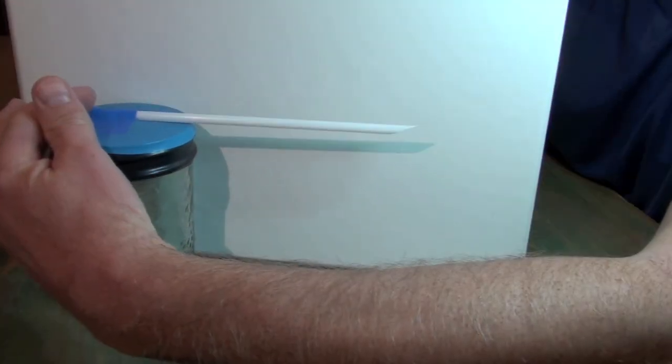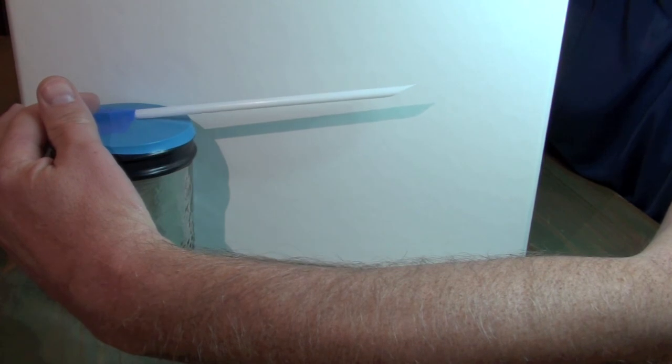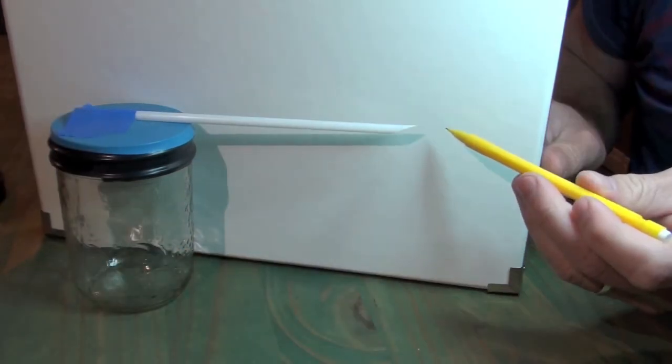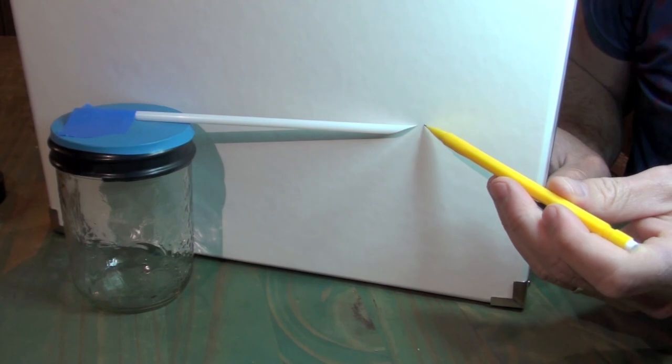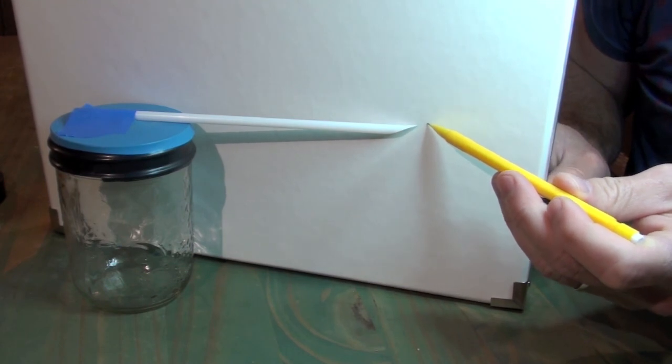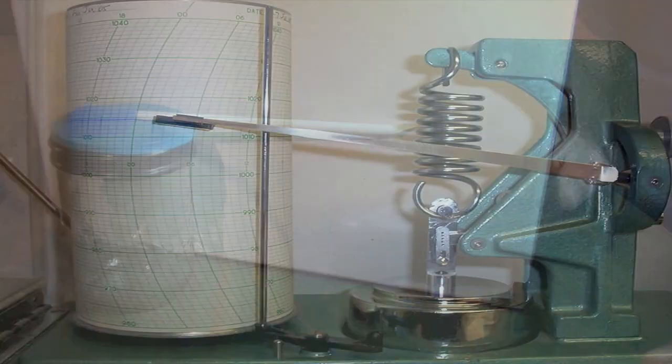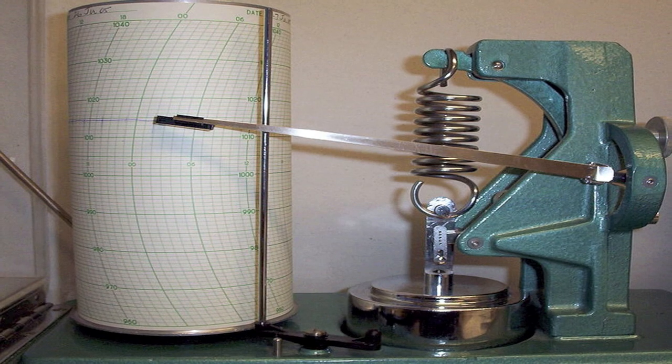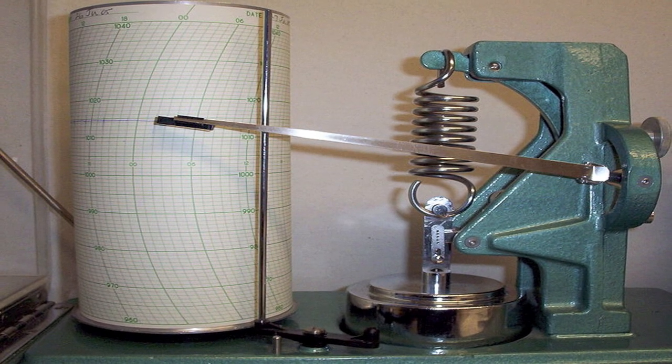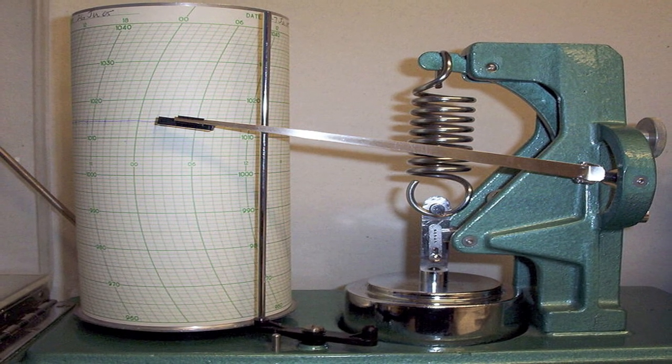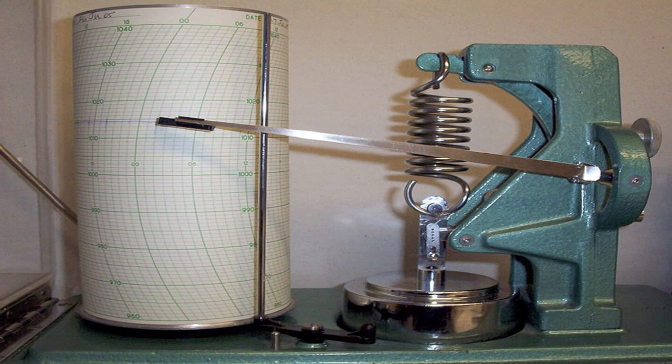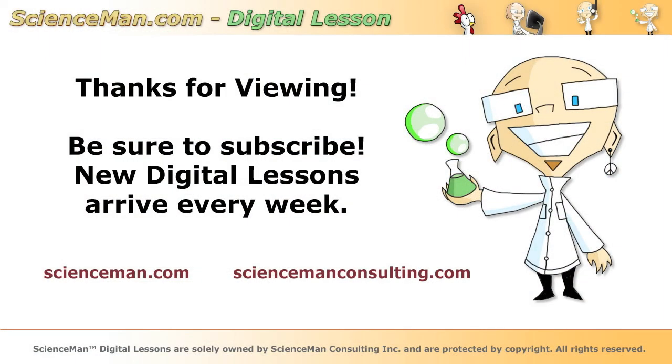You can track pressure changes by marking the position of the tip of the straw periodically. As the straw moves, you'll know the atmospheric pressure has changed. Modern barographs operate on the same principle. The only difference is a slowly rotating drum that constantly tracks pressure. I hope you enjoyed learning about pressure. Thanks for viewing this digital lesson.